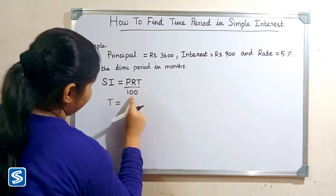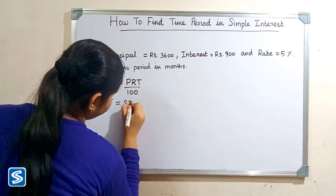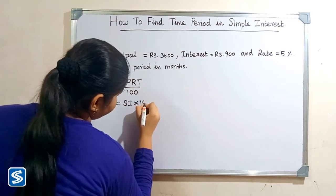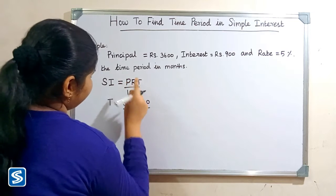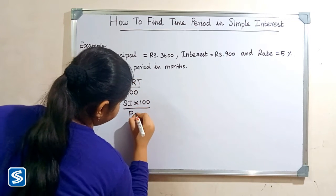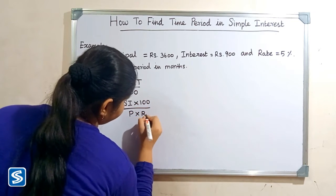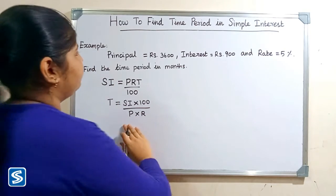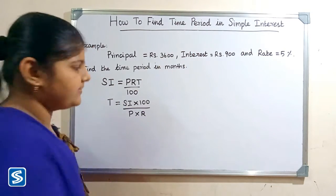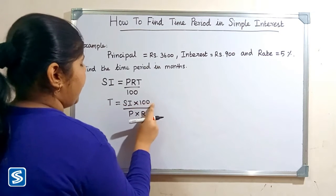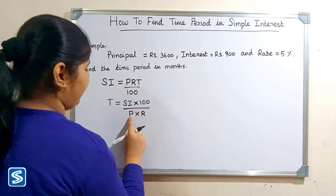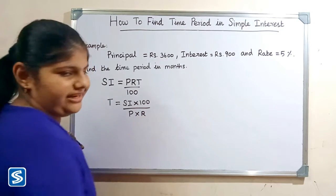Simple interest multiply 100 divided by P multiplied R. So the formula to find time period is time period is equal to simple interest multiply 100 divided by principal amount multiply rate of interest.